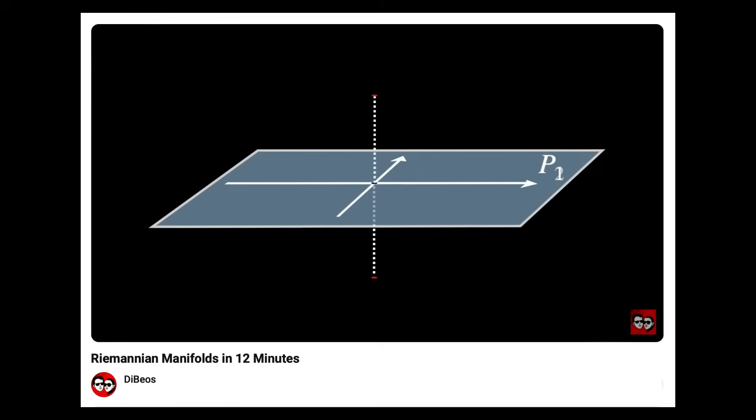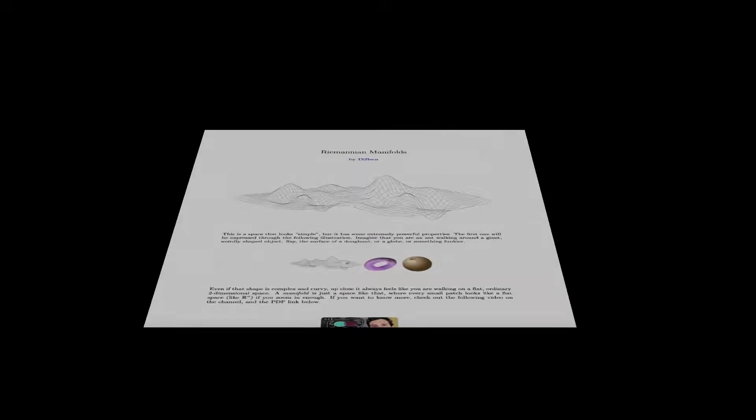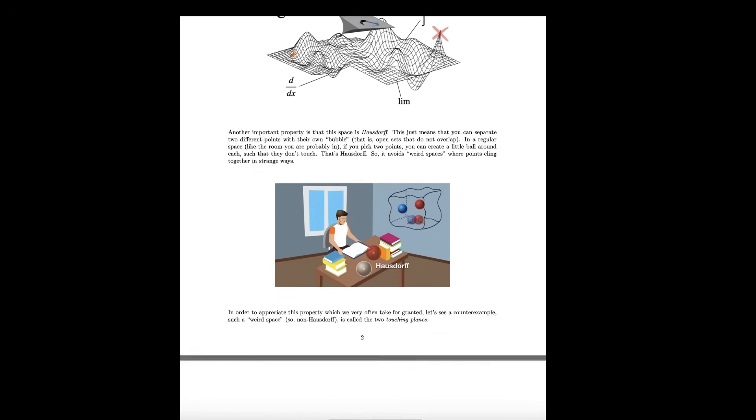Now it's time to be a little bit more rigorous. We'll see an algorithm to calculate the scalar curvature R of a general n-dimensional Riemannian manifold. If you don't know what a Riemannian manifold is, check out this video on the channel, where we also attached a very clear written explanation in PDF.